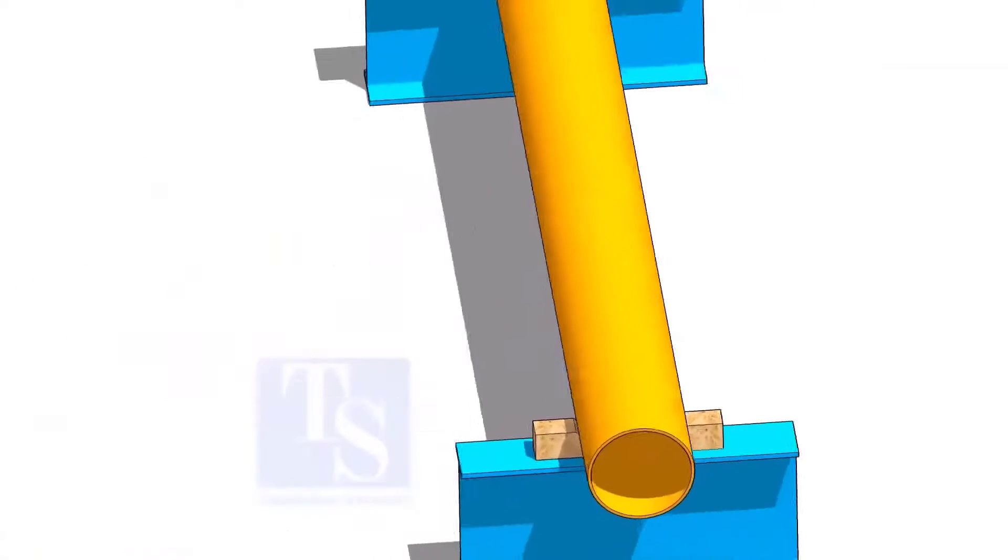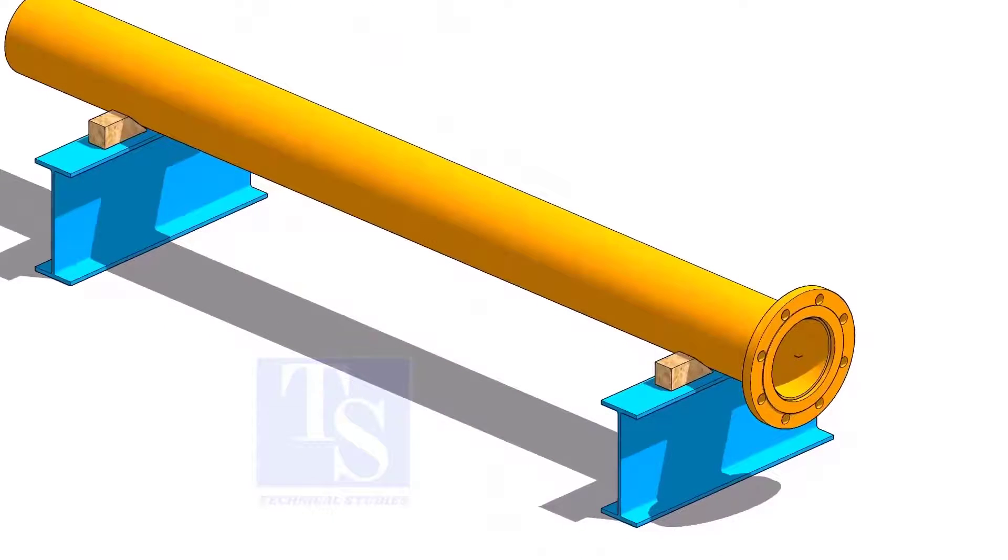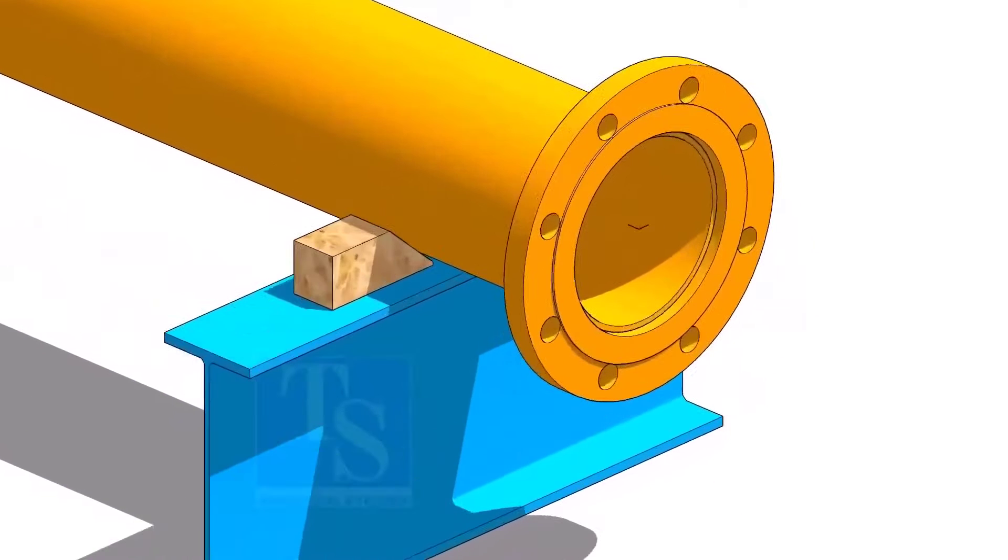Put the pipe on the supports and level the pipe roughly. Put packing on both sides of the pipe. Put the flange on the pipe.